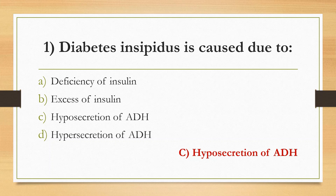ADH — Antidiuretic Hormone, also called Vasopressin — functions to enable the kidney to retain water in the body. When there is hyposecretion (reduced secretion) of ADH, it leads to diabetes insipidus.